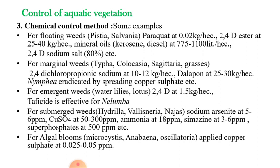For submerged weeds like Hydrilla and Najas, we can use sodium arsenite at 5 to 6 ppm, copper sulfate at 50 to 300 ppm, ammonia at 18 ppm, superphosphate at 500 ppm, or copper sulfate at 0.025 to 0.05 ppm. These are chemicals used for the eradication of weeds under the chemical control method.